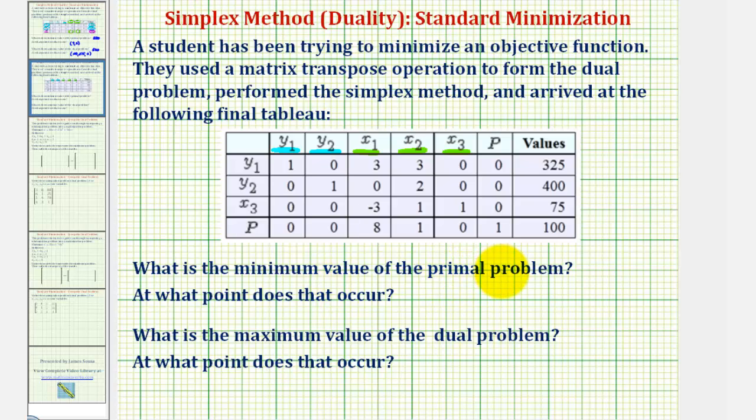When solving a minimization problem using duality, the minimum value of the primal problem is the same as the maximum value of the dual problem. So looking at the last row of the tableau,